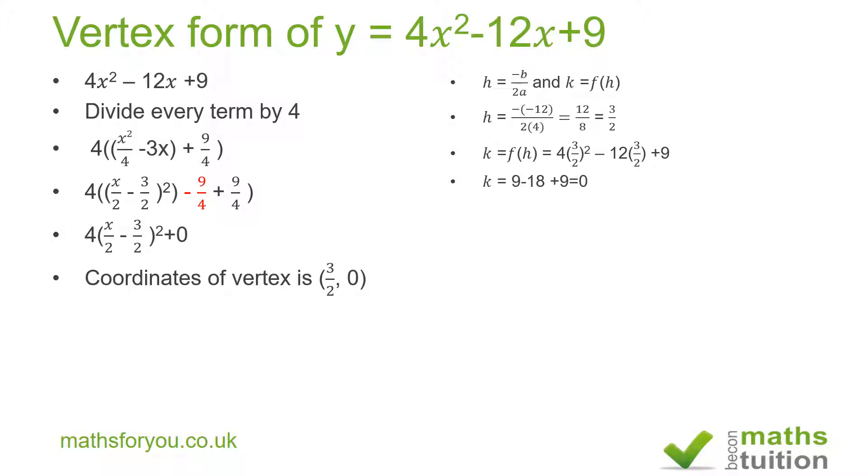So the k value is 0, which means that at the vertex, the turning point, the y-coordinate is 0. Now the coordinate of the vertex is (3/2, 0), so the vertex form will be 4(x/2 - 3/2)² + 0. So that now will be the vertex form of this expression.